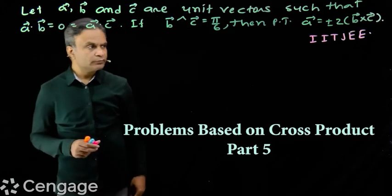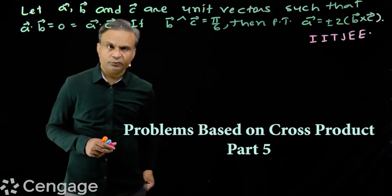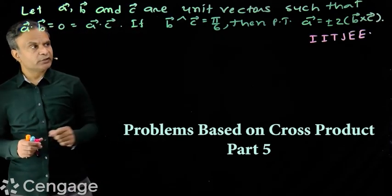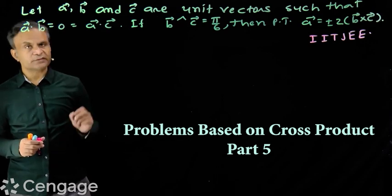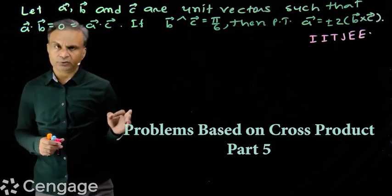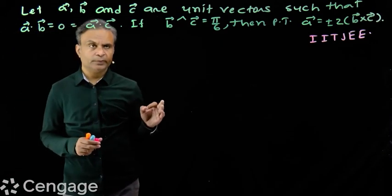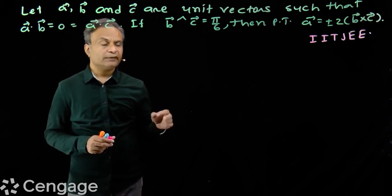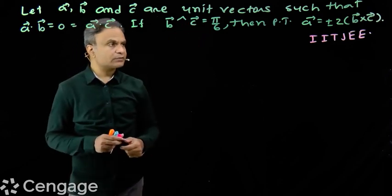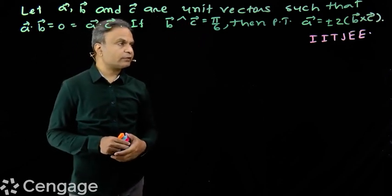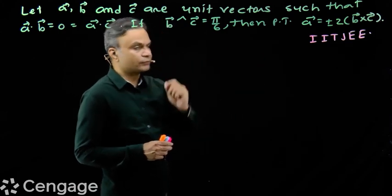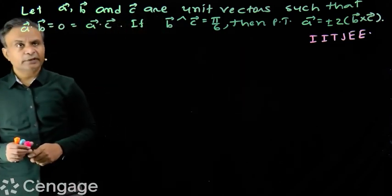Now we have one question from the JEE exam. Let a, b, and c be unit vectors such that a dot b equals a dot c equals zero. The angle between vectors b and c is pi by six. Then prove that vector a equals plus or minus two times b cross c.